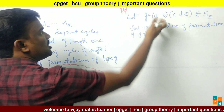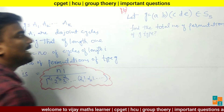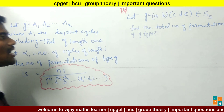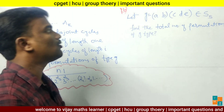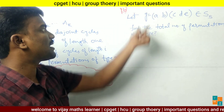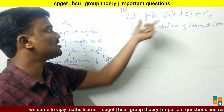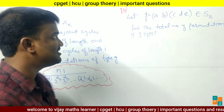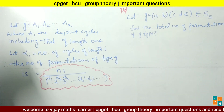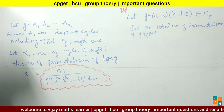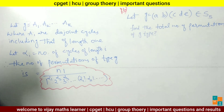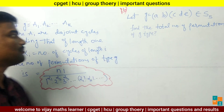Now let's see a problem. Given G = (AB)(CDE), which belongs to symmetry group S5, where we have two disjoint cycles: (AB) of length 2 and (CDE) of length 3. Find the total number of permutations of G type.